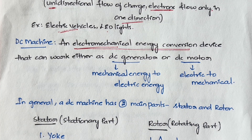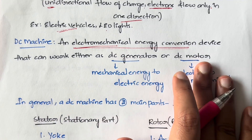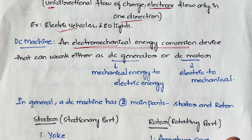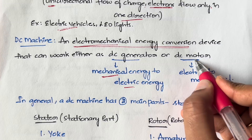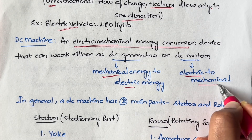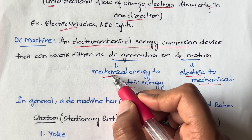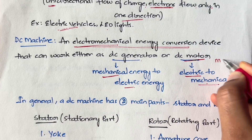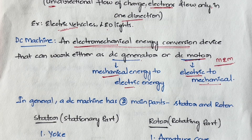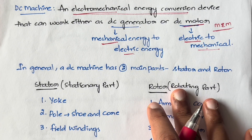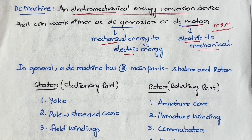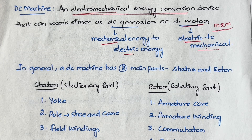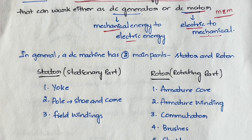I will explain how a DC generator and DC motor work in the next two videos. For now, let's see what parts a DC machine has — whether generator or motor, the parts are the same, only the working principle changes. In case of a DC generator, mechanical energy is converted to electrical energy. In case of a DC motor, electrical energy is converted to mechanical energy. Remember: motor — electrical to mechanical, generator — mechanical to electrical. Once you understand the working principle, you won't need to memorize it.